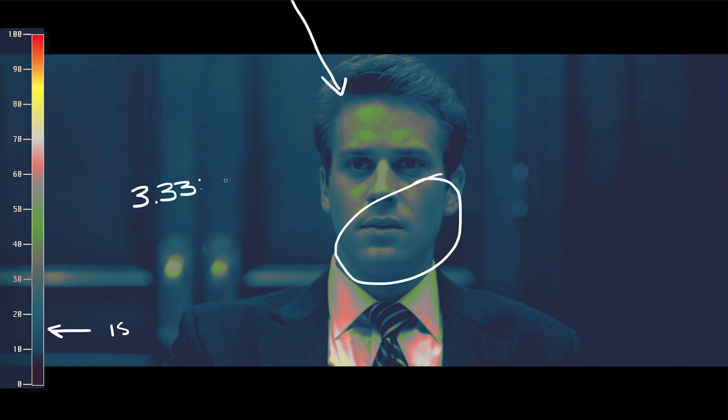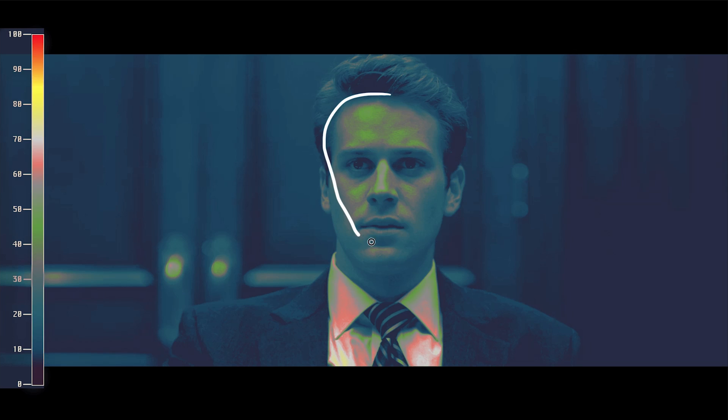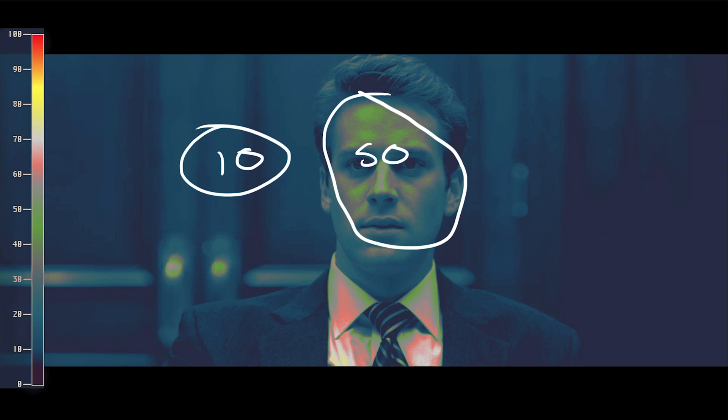That gives a ratio of 3.3 to 1, or we can round to 3 to 1. The talent's key, again at 50 IRE, to the background at 5 to 10 IRE, is a ratio of 5 to 1. The ratio is important if we want to expose our shot differently than the reference image. As long as we keep that ratio, we can over or underexpose the image to fit the mood we're looking for. But in this case, I really like the exposure, so we'll be using the same IRE levels when lighting our shot. Now let's jump on set and take a look.